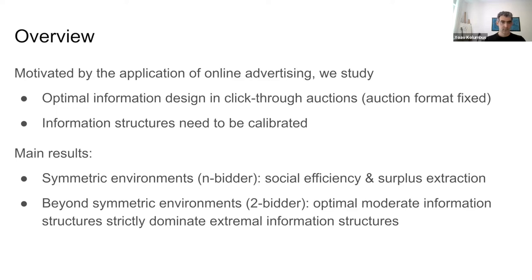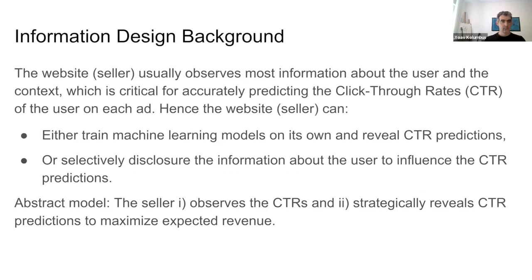The definitions of moderate and extremal will be introduced later. Before moving into more details, we provide more background about the information design problems studied in the paper. In the practice of online advertising, the website on which the ads are placed observes the most information about the user and the context of the browsing event. Such information is often critical for predicting the click-through rates of the user on each ad candidate. Therefore, the website, or the seller, has a choice to design the information policy.